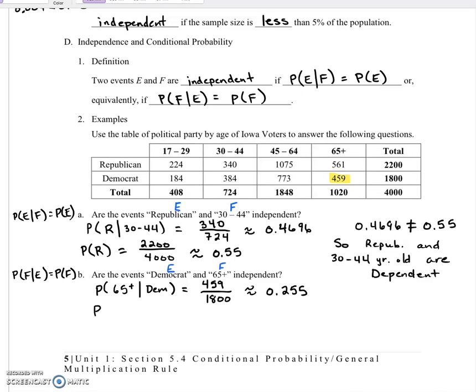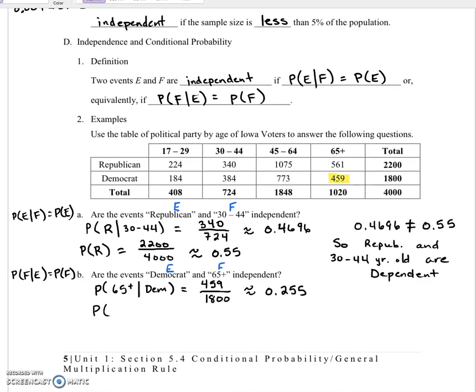So now let's calculate just the probability of being a Democrat. So in this case, we need the total number of Democrats, 1800. And we want to divide that by the total number of people, which is 4000. Sorry, we don't want to do that for the Democrats. We want to do it for people 65 plus. I apologize for that. So the probability of 65 plus.